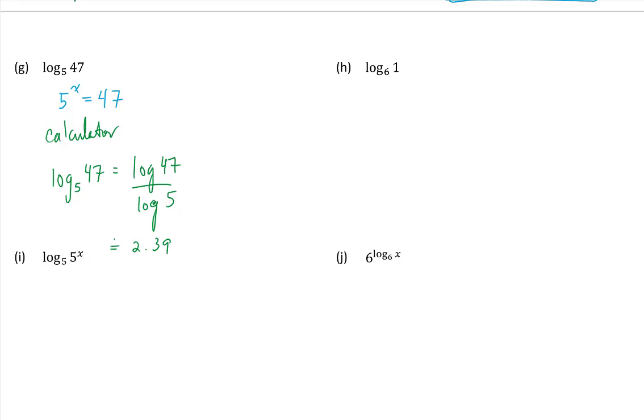Next one. 6 to the exponent of what is equal to 1. If you ever see a 1 here in your logarithm, the answer for x is always going to be 0. The log of base anything to 1 is going to equal 0.